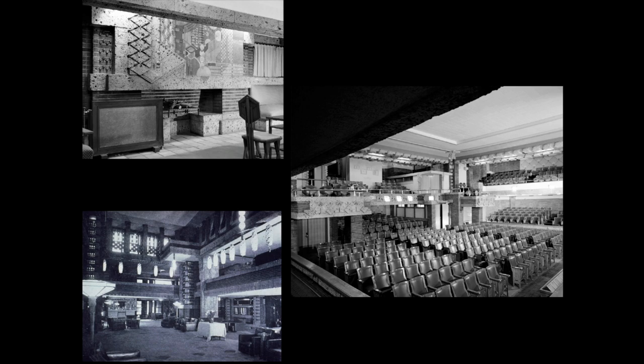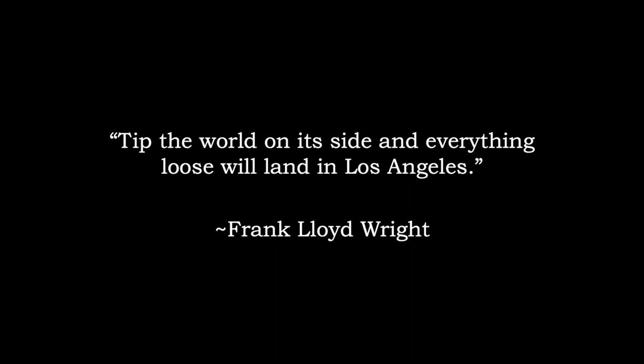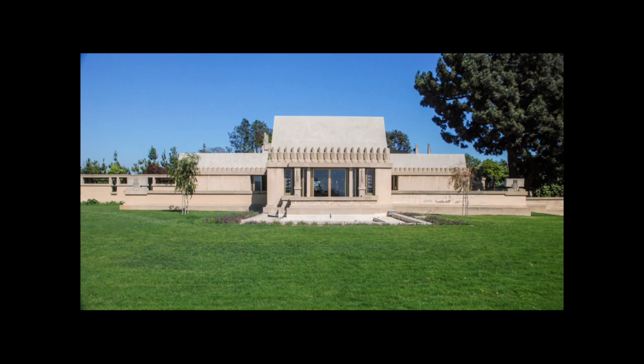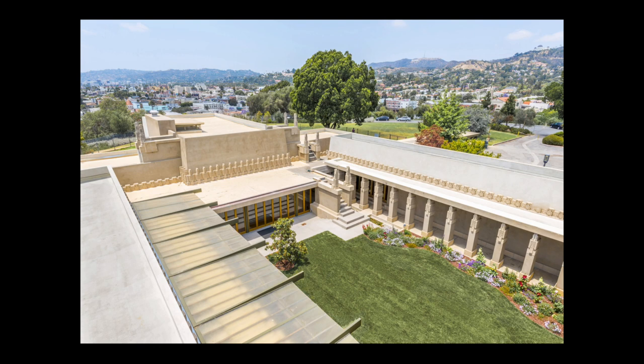He does have a great quote: 'Tip the world on its side and everything loose will land in Los Angeles.' And he did do some buildings here in LA. The Hollyhock House is a really great building nearby — it's just off the 5 freeway at Hollywood Boulevard in what's called Barnsdall Park, on top of the hill. You can walk through it, and last time I was there in summer 2019, they were only charging about $7. You can kind of see the Griffith Observatory up on the hill to the right, just to give you an idea of where this is located.